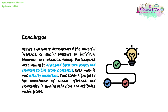Conclusion. Asch's experiment demonstrated the powerful influence of social pressure on individual behaviour and decision making. Participants were willing to disregard their own senses and conform to the group consensus, even when it was clearly incorrect. This study highlighted the importance of social influence and conformity in shaping behaviour and attitudes within groups.